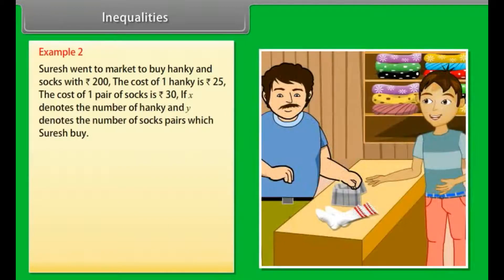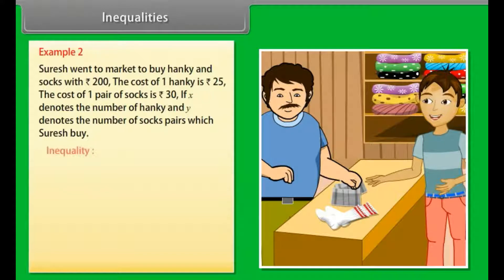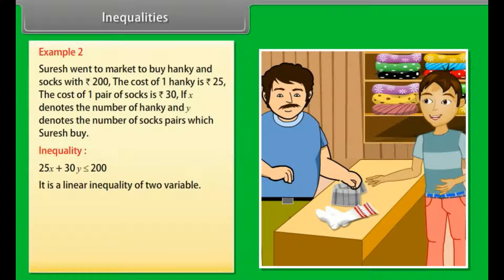Example 2: Suresh went to market to buy hanky and socks with rupees 200. The cost of one hanky is rupees 25, and the cost of one pair of socks is rupees 30. If x denotes the number of socks pairs which Suresh buys, then we can represent the statement in inequality form as: 25x plus 30y less than or equal to 200. It is a linear inequality of two variables.